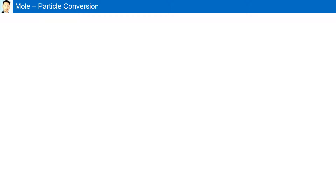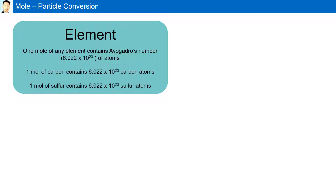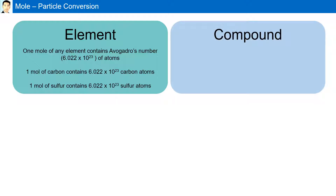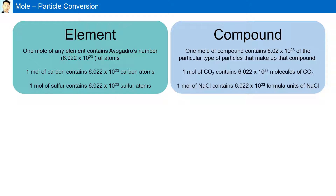Mole-Particle Conversion. One mole of any element contains Avogadro's number — 6.022 times 10 to the 23rd — of atoms. For example, a mole of carbon contains 6.022×10²³ carbon atoms, and a mole of sulfur contains 6.022×10²³ sulfur atoms. Similarly, one mole of a compound contains 6.022×10²³ of the particular type of particles that make up that compound. For example, one mole of CO2 contains 6.022×10²³ molecules of CO2, and a mole of NaCl contains 6.022×10²³ formula units of NaCl.